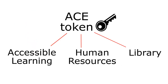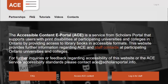To use ACE, you need an ACE token. If you're registered with the ALC or Human Resources, you can get a token from those offices. If you have a print disability but aren't registered, you can get a token from the library. ACE requests take a while, so first check to see if a book has already been scanned by ACE.